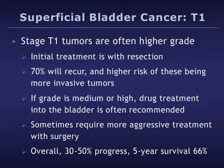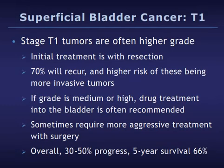Stage T1, referred to by some as early invasive or superficially invasive tumors, are often higher grade. Initial treatment is again with resection, then close follow-up. Seventy percent of these tumors will recur, and there is a higher risk of recurrences being more invasive. If the grade is medium or high, drug treatment into the bladder is often recommended. Sometimes these high-grade T1 tumors are unresponsive to therapy and may require more aggressive surgical treatment. Because T1 tumors tend to be high grade, the overall chance of progression is about 30 to 50 percent, and the survival rate is lower at 66 percent. These tumors must be watched very closely and treated aggressively when appropriate.